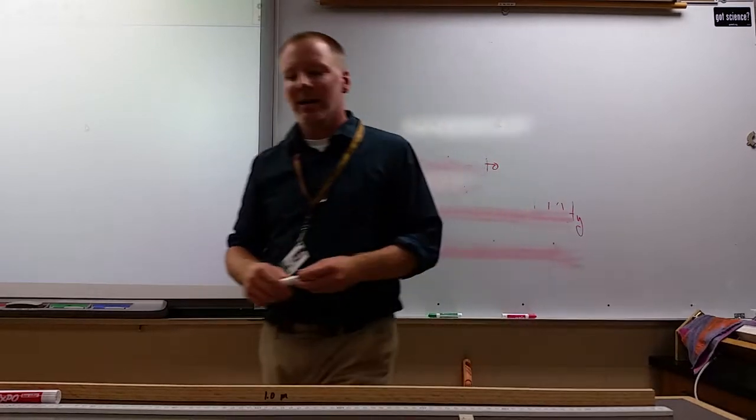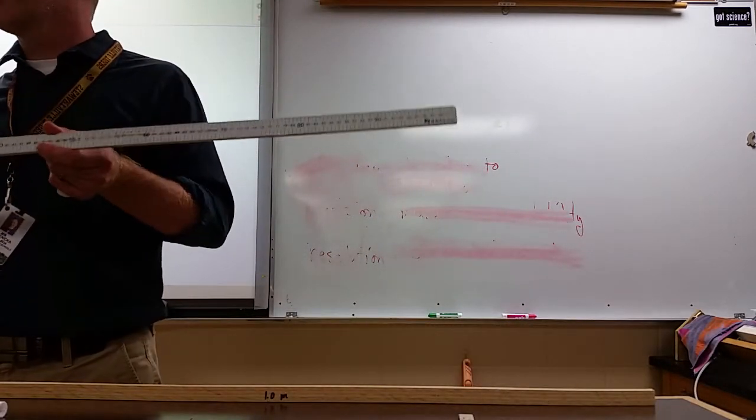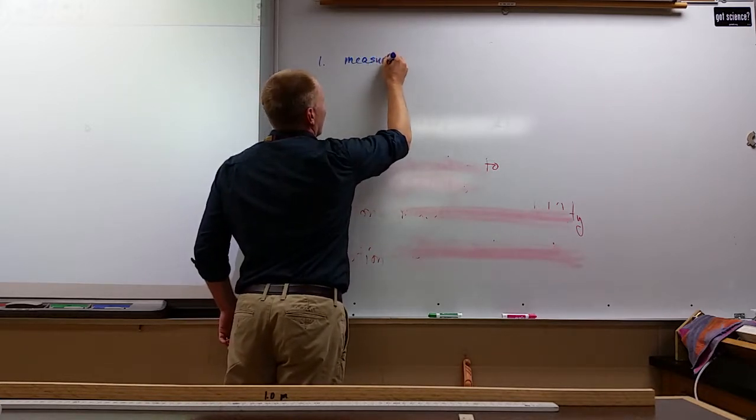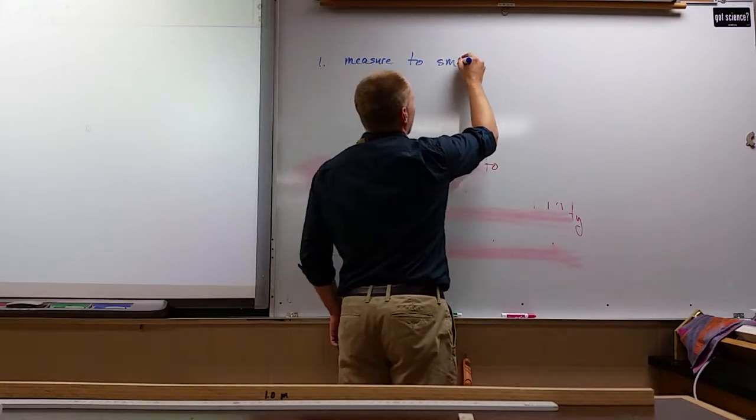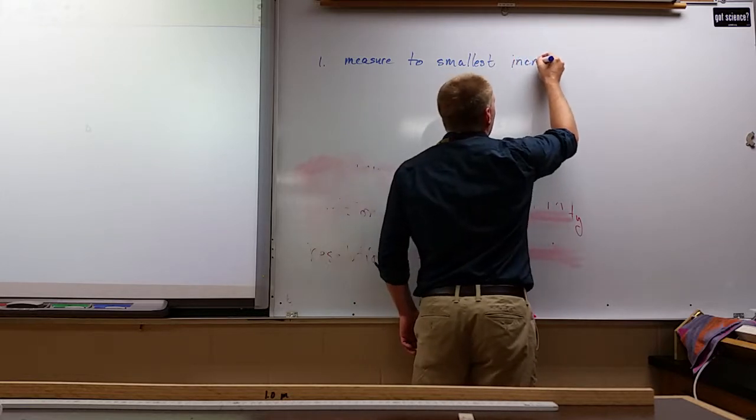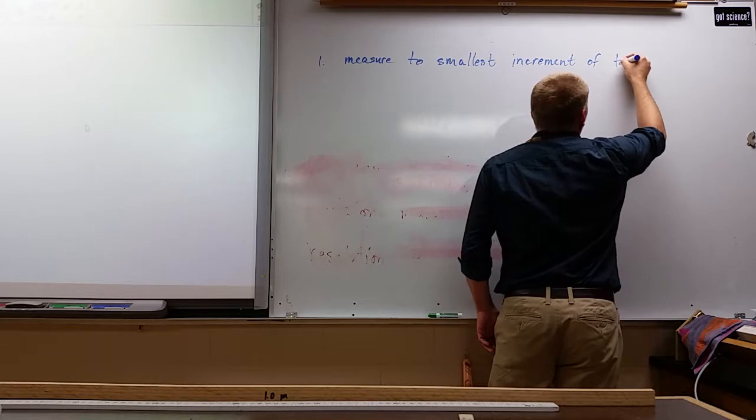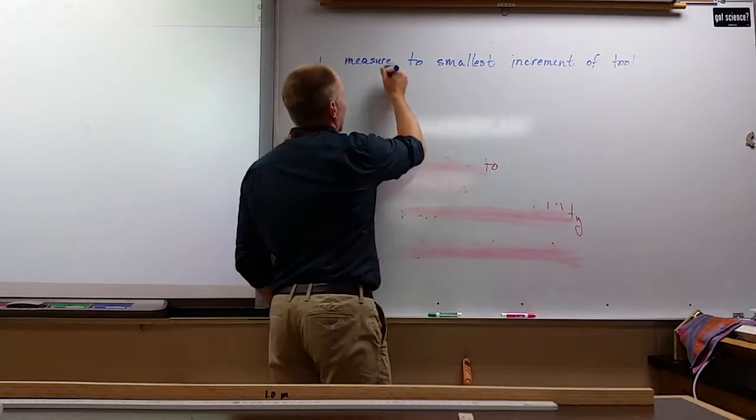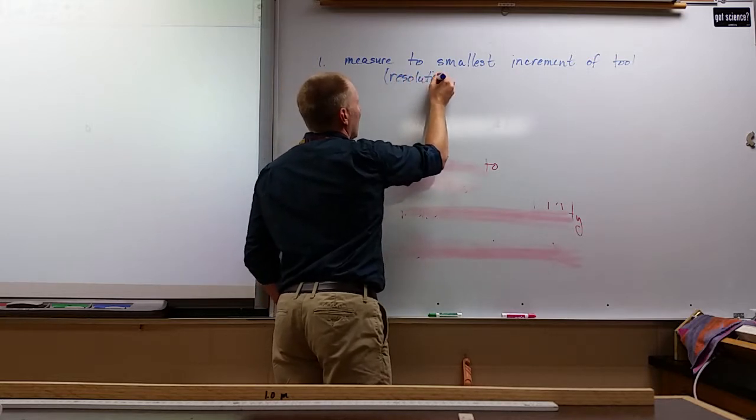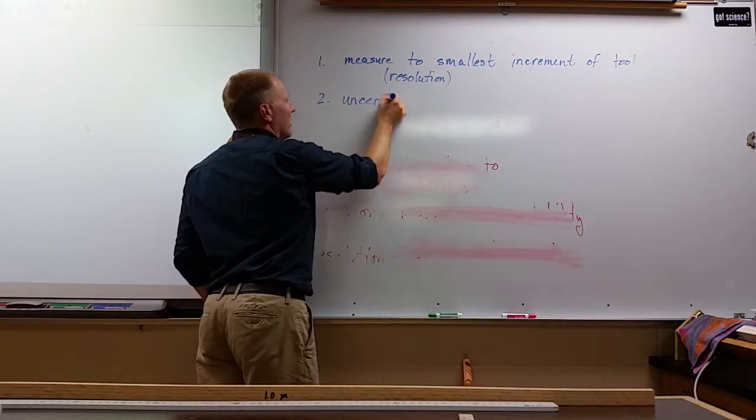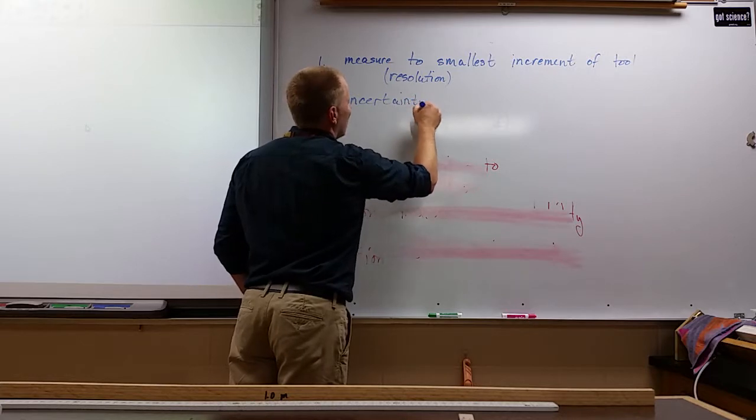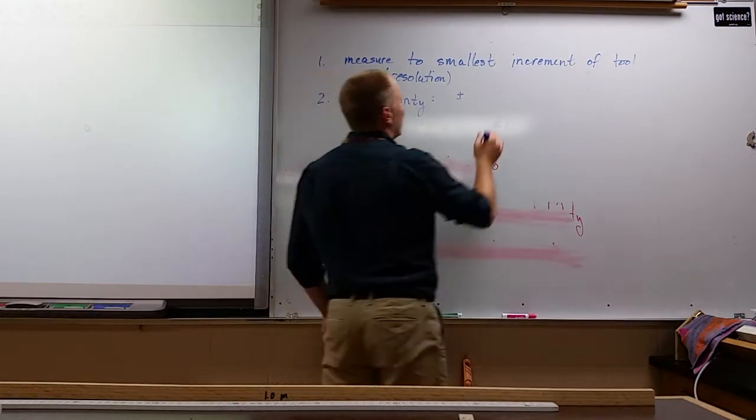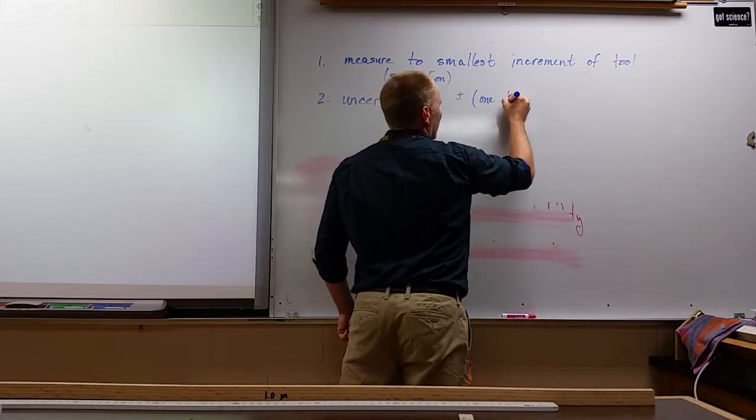The physics way is to measure to the smallest increment on your tool. That's step one. Whatever you're measuring, you measure to the resolution of the tool. Then you have some uncertainty. Uncertainty is how much could you be wrong based on that measurement, and that we use the notation plus or minus one-half of the resolution.